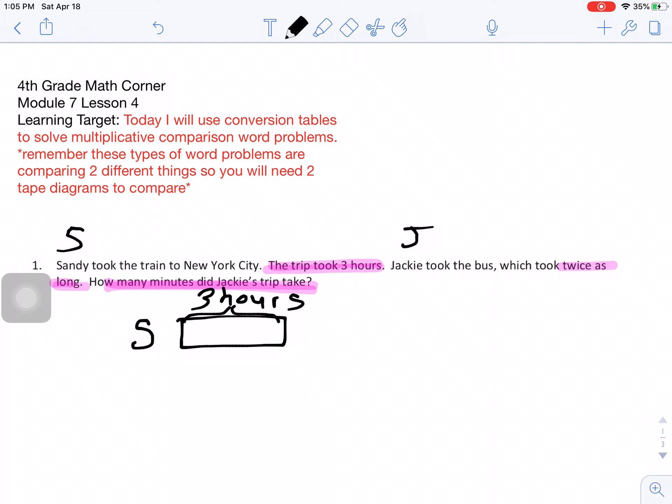And then I know that Jackie, her trip took twice as long. And I remember that twice means two times. So Jackie was on the bus two times more than Sandy. So the same as Sandy, but two times.